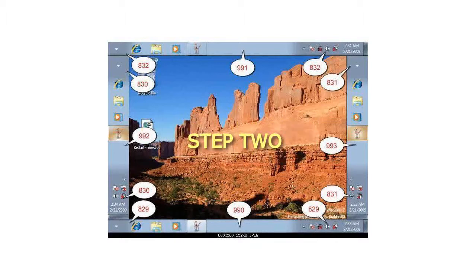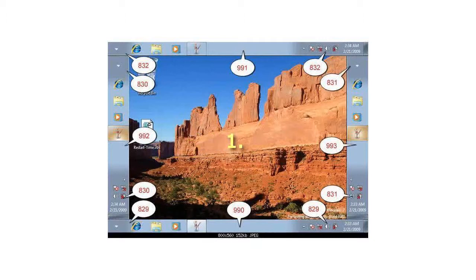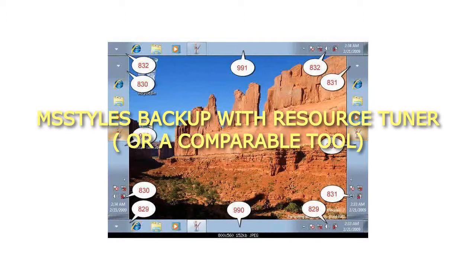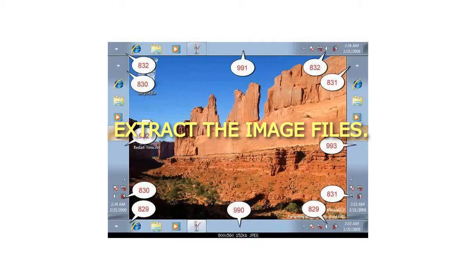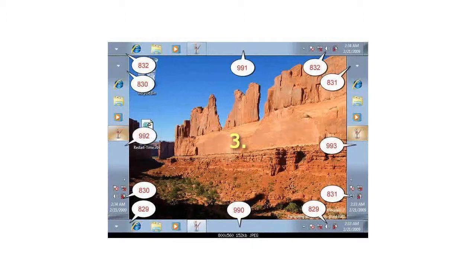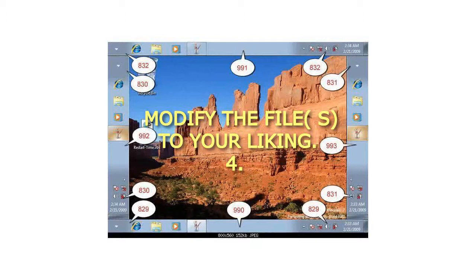Step 2 — how to edit. Step 1 — open your Aero.mstyles backup with Resource Tuner, or a comparable tool. Step 2 — extract the image files. Step 3 — modify the files to your liking.